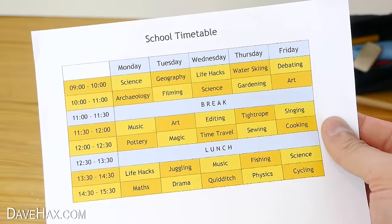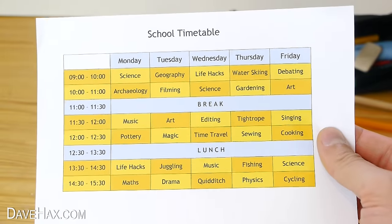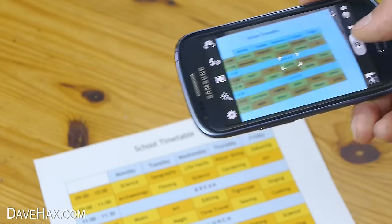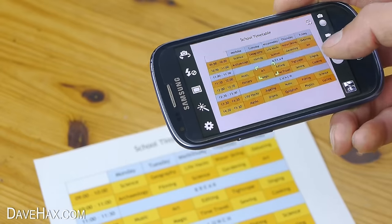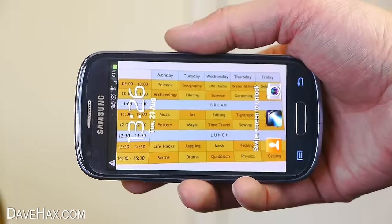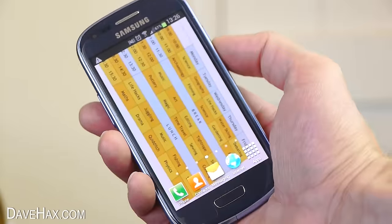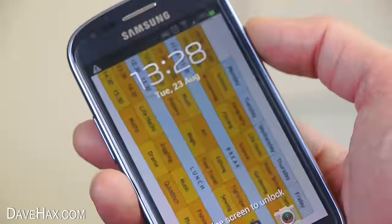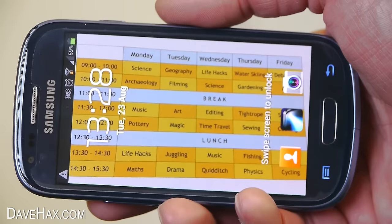If you've been given a new timetable and you're struggling to learn it, you can take a photo of it on your phone and set it as your lock screen picture and your wallpaper. This way you'll always have it to hand and looking at it regularly will help you to learn it.